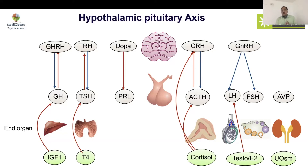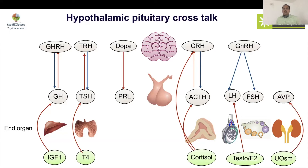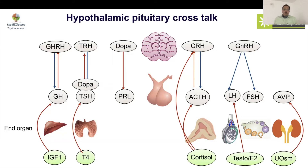This hypothalamic-pituitary system controls the entire spectrum of pediatric endocrinology, and disorders anywhere can cause multiple issues. Importantly, there is crosstalk between hormones. Dopamine, while considered an inhibitor of prolactin, also inhibits TSH — this is very important in an intensive care setting. If a patient is on dopamine, TSH levels will be low.